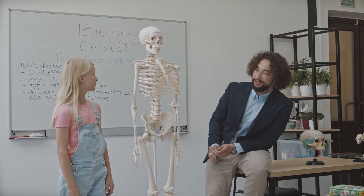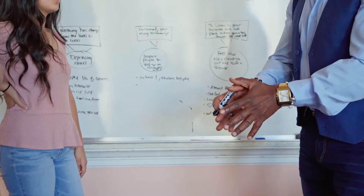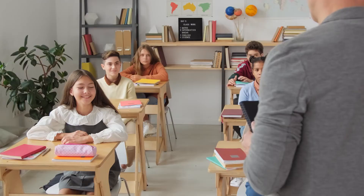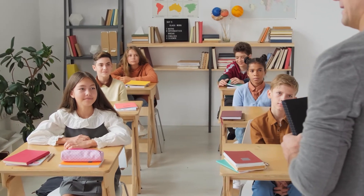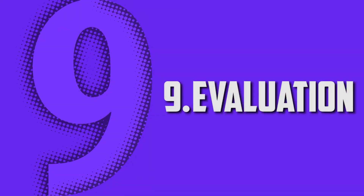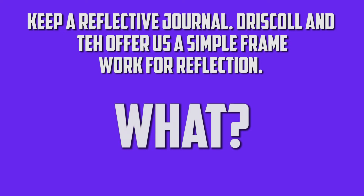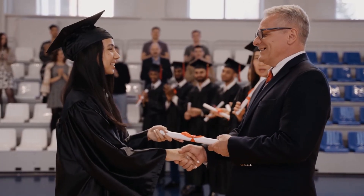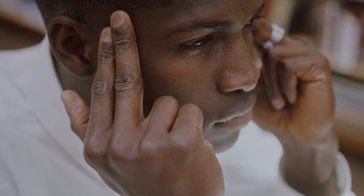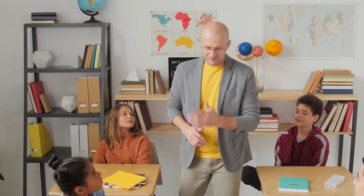Number eight: end the lesson. The teacher should always finish up the lesson with a summary of the whole lecture. The overview of the lesson should include all the main concepts that were taught. Moreover, ask the students what they learned and how they will implement that. Before leaving, the teacher should inform the students about what they will be covering in the next class, so they know what to expect. Number nine: evaluation. Keep a reflective journal. Driscoll and Ta offer us a simple framework for reflection: What? So what? Now what? Ask yourself questions: Were you able to achieve all the learning objectives that you planned? Were there any notable or problematic behaviors? What does the data from your formative assessments tell you? This will help you plan the next lesson and interactions with students.